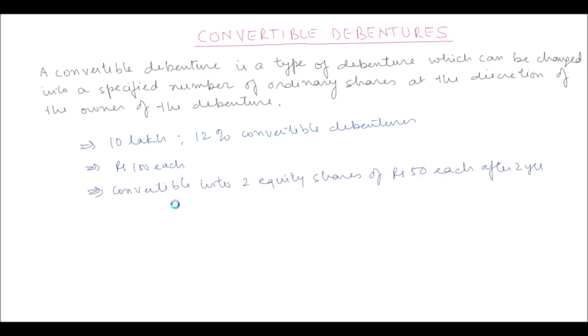So basically at the time of issue of these convertible debentures, the company will receive a cash inflow of 10 lakh multiplied by 100, which is equal to Rs. 1000 lakh. Now just for the sake of understanding, Rs. 10 lakh is equal to Rs. 1 million, just in case you want to understand this in millions.